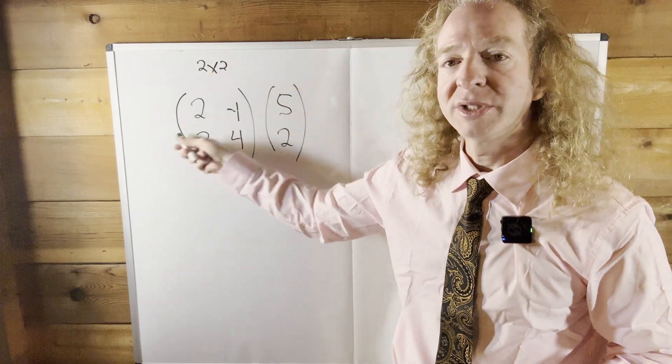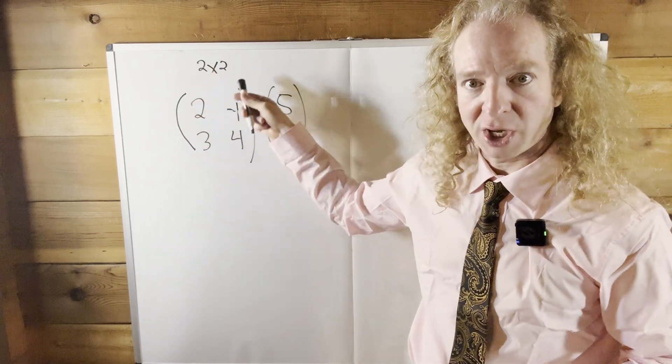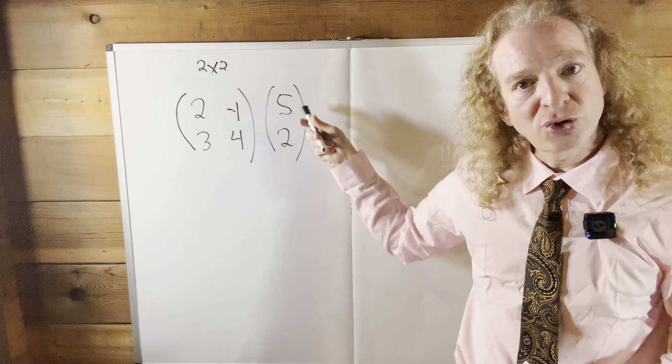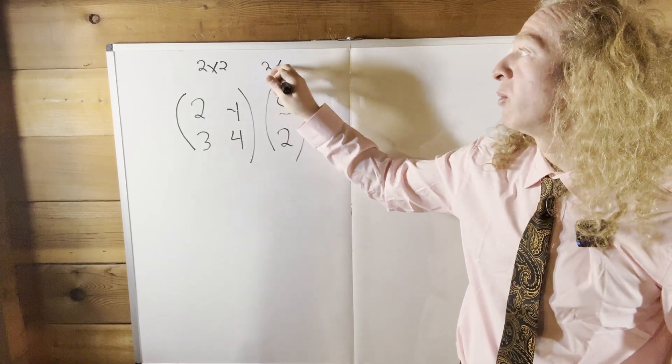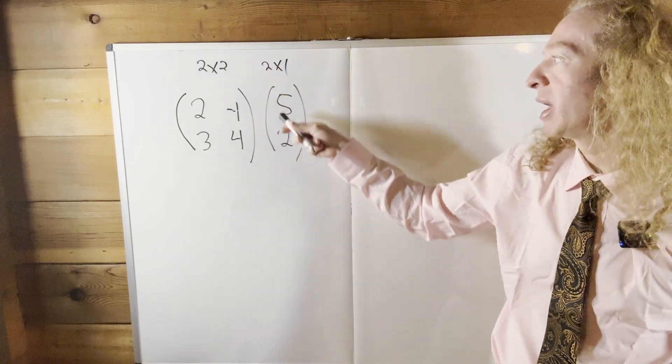Again, first row, second row, so two rows, two columns. This one here has two rows and one column, so this is a two by one matrix. Two rows and one column.